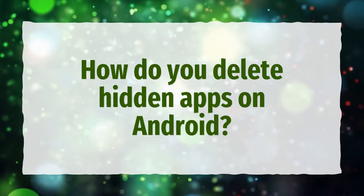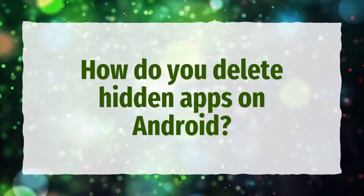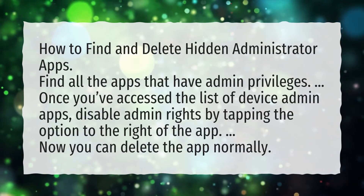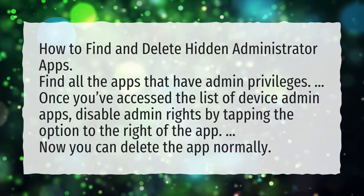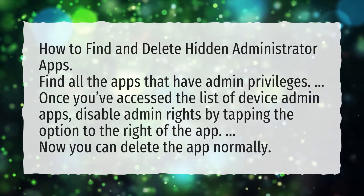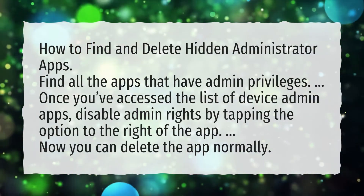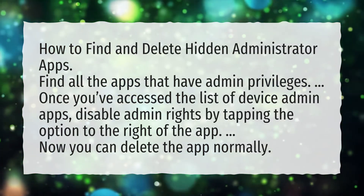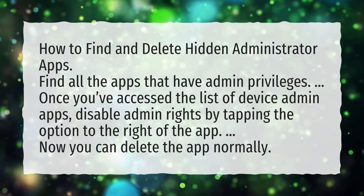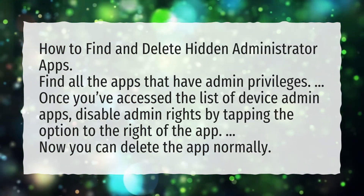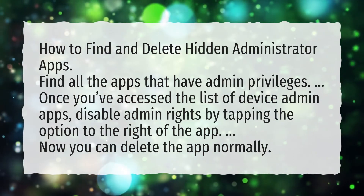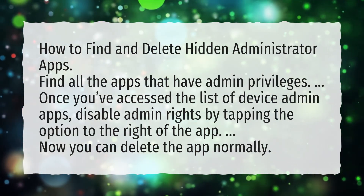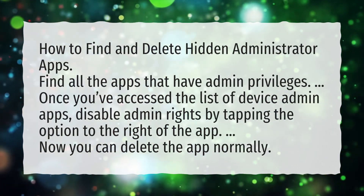How do you delete hidden apps on Android? How to find and delete hidden administrator apps. Find all the apps that have admin privileges. Once you've accessed the list of device admin apps, disable admin rights by tapping the option to the right of the app. Now, you can delete the app normally.